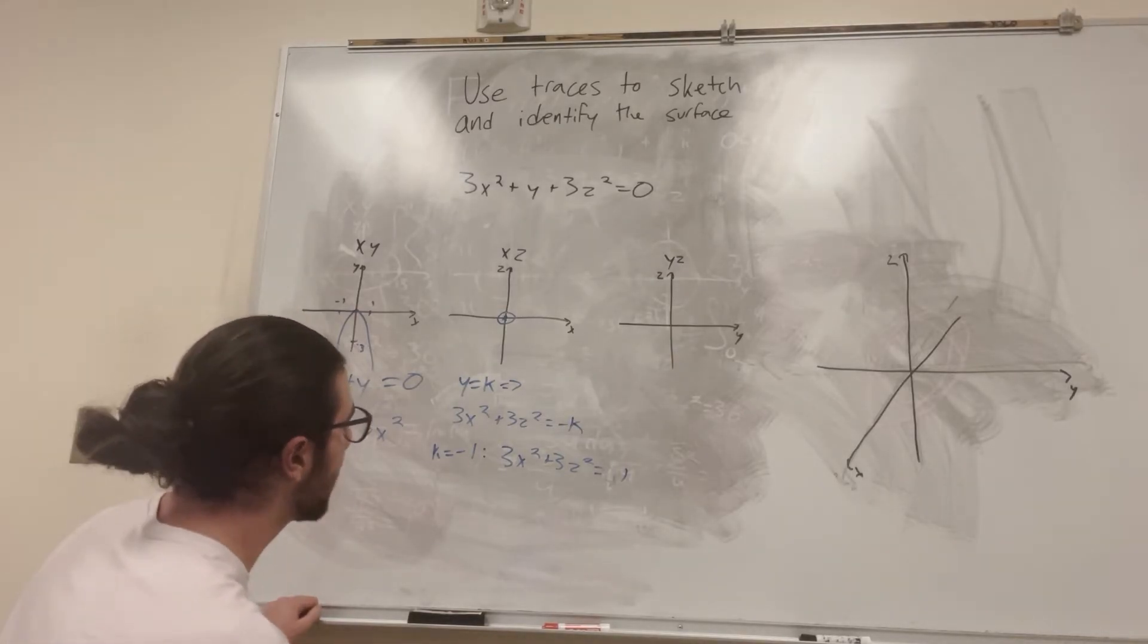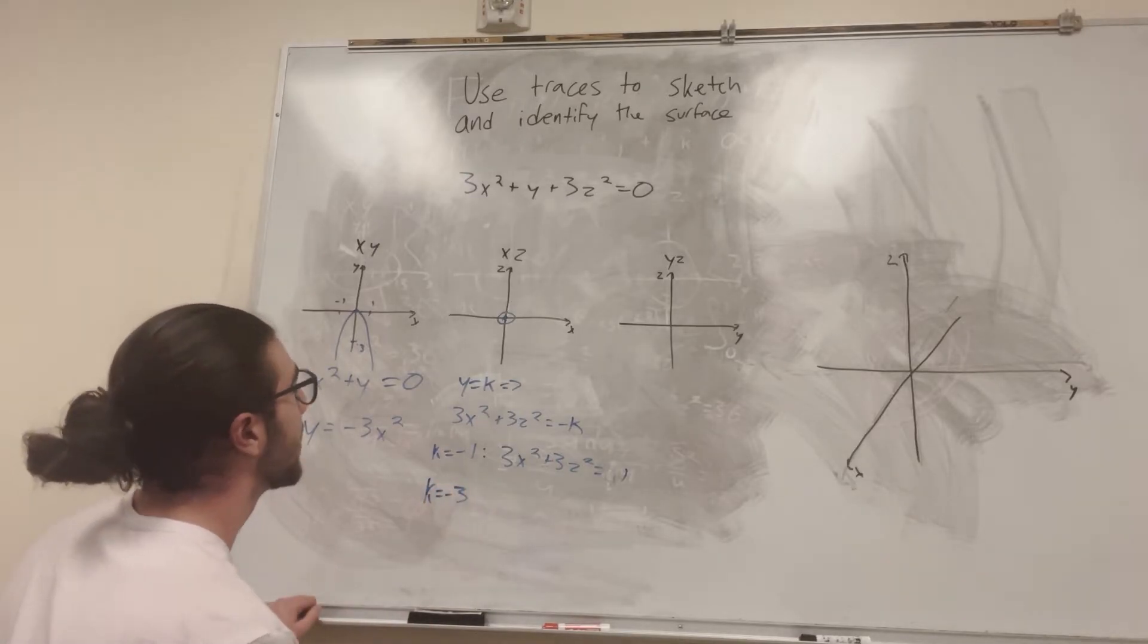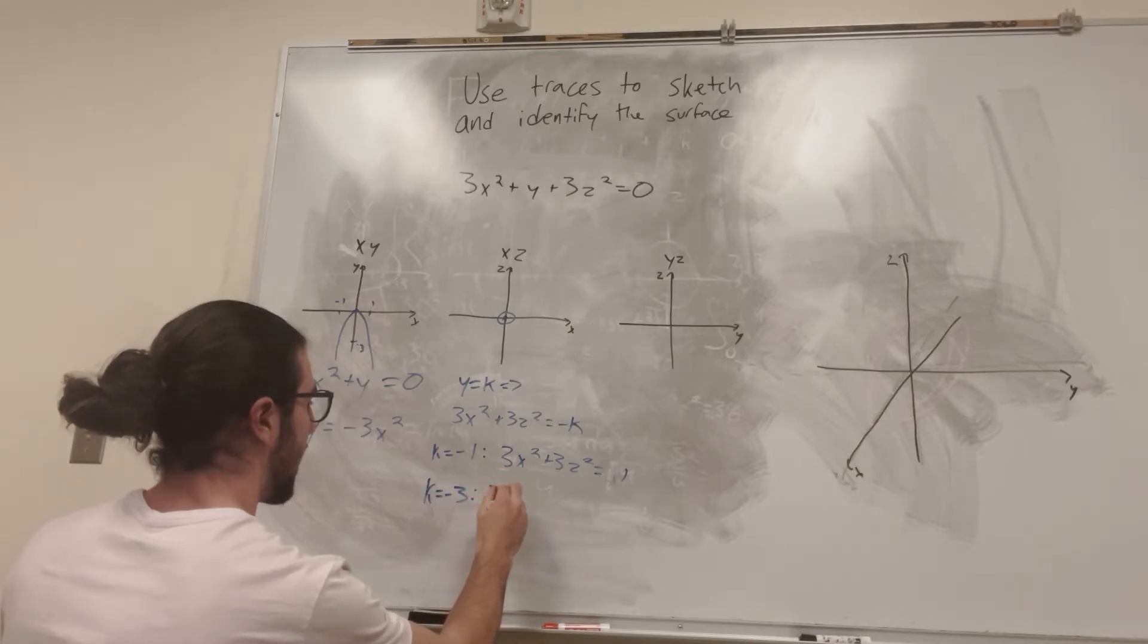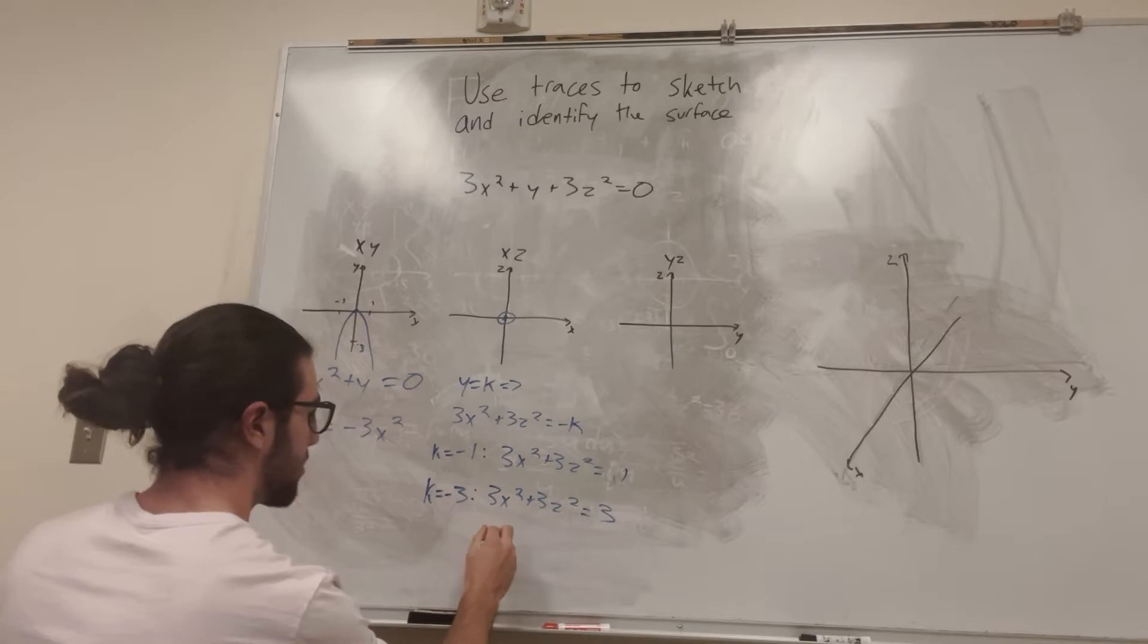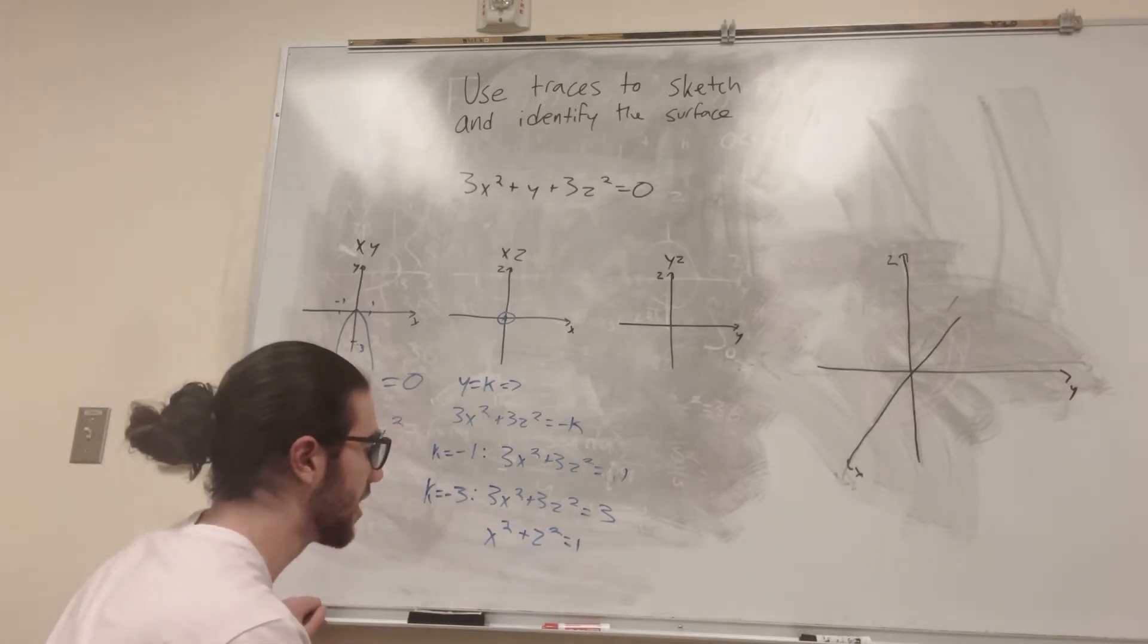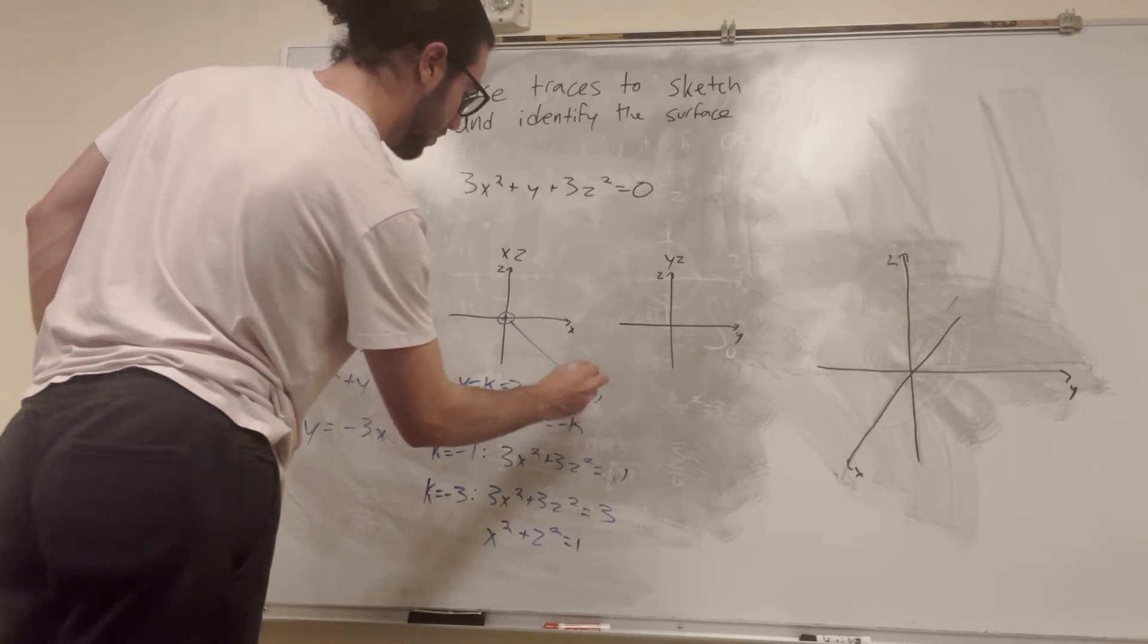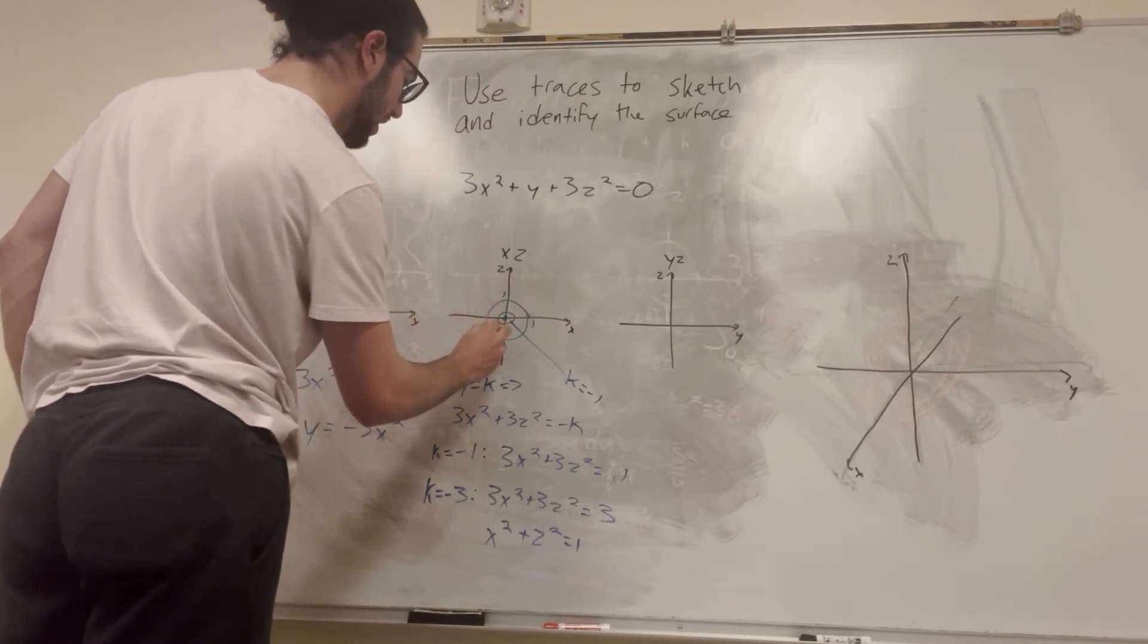Alright, so let's say k is equal to negative 3. That's when y is equal to negative 3, alright? Therefore, we have 3x squared plus 3z squared is equal to 3. Then that just means if we divide by 3 on both sides, x squared plus z squared is equal to 1. And this is the equation of a circle with radius 1. So this is at k is equal to negative 1. And this is 1, 1, negative 1, negative 1.